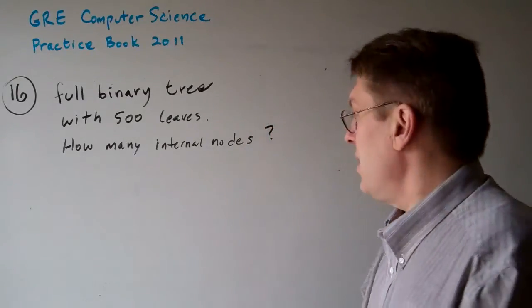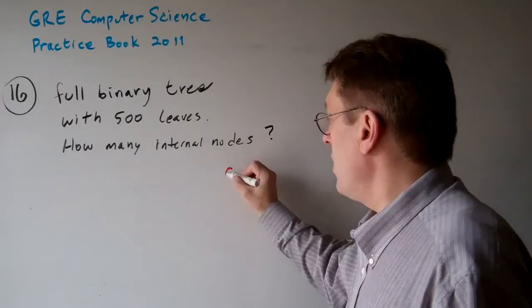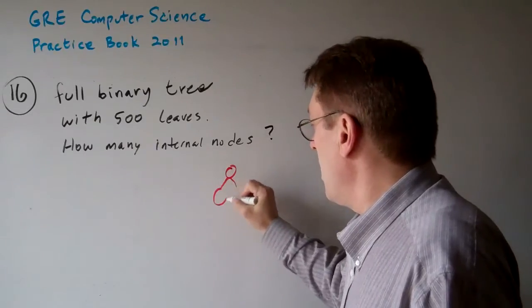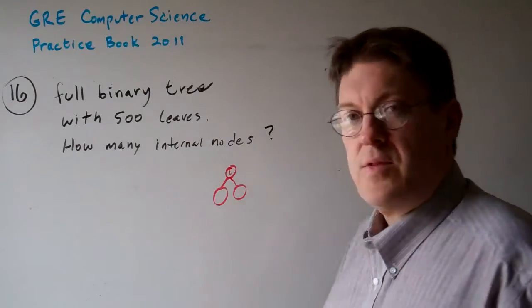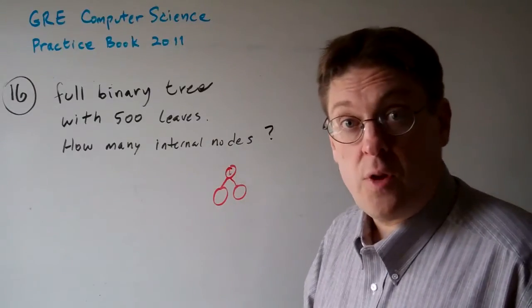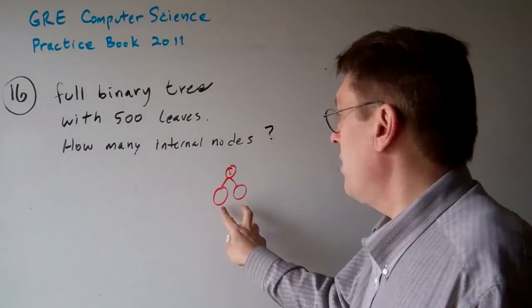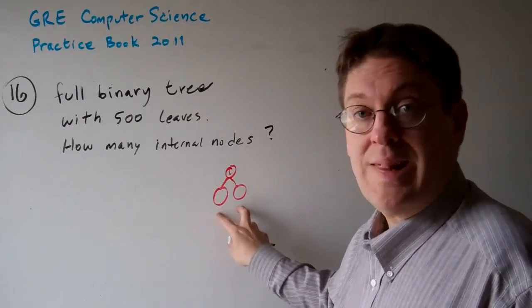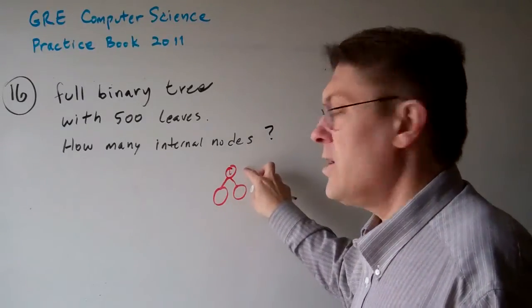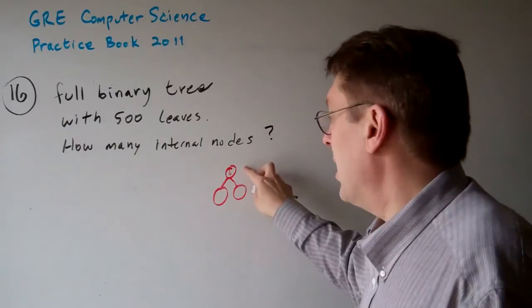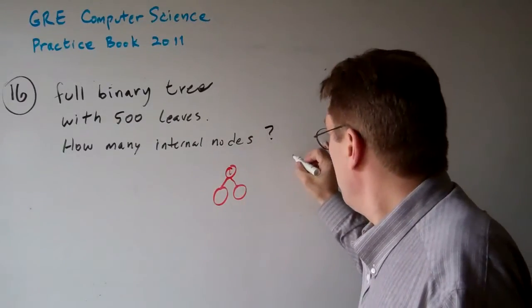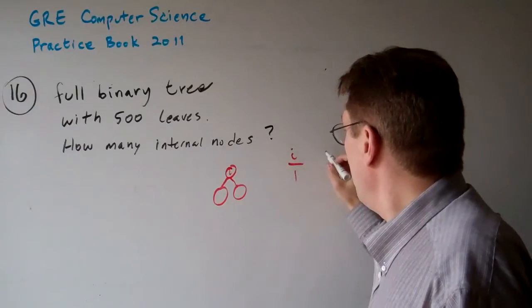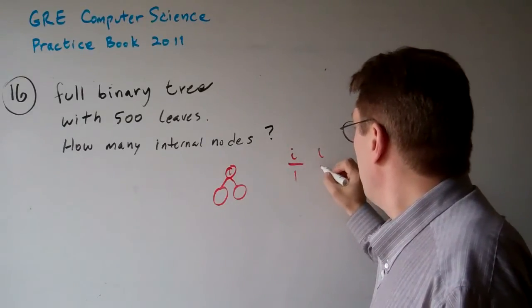The idea is this. If you start off with one internal node, the root, and two leaves, you have the smallest possible full binary tree. Again, a full binary tree, you have to have two leaves on the tree for every internal node. So there you have one internal node and two leaves.